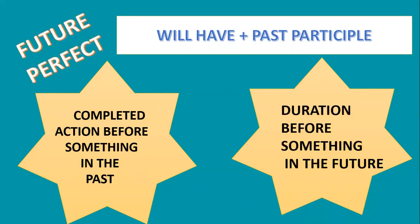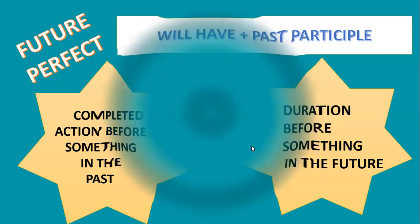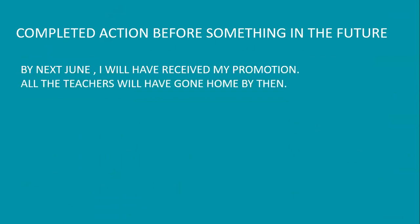Future perfect tense. The sentence structure is: will have plus past participle. Use it when you want to talk about actions which will have been completed by a certain time in the future. Examples: 'By next June, I will have received my promotion.' 'All the teachers will have gone home by then.'